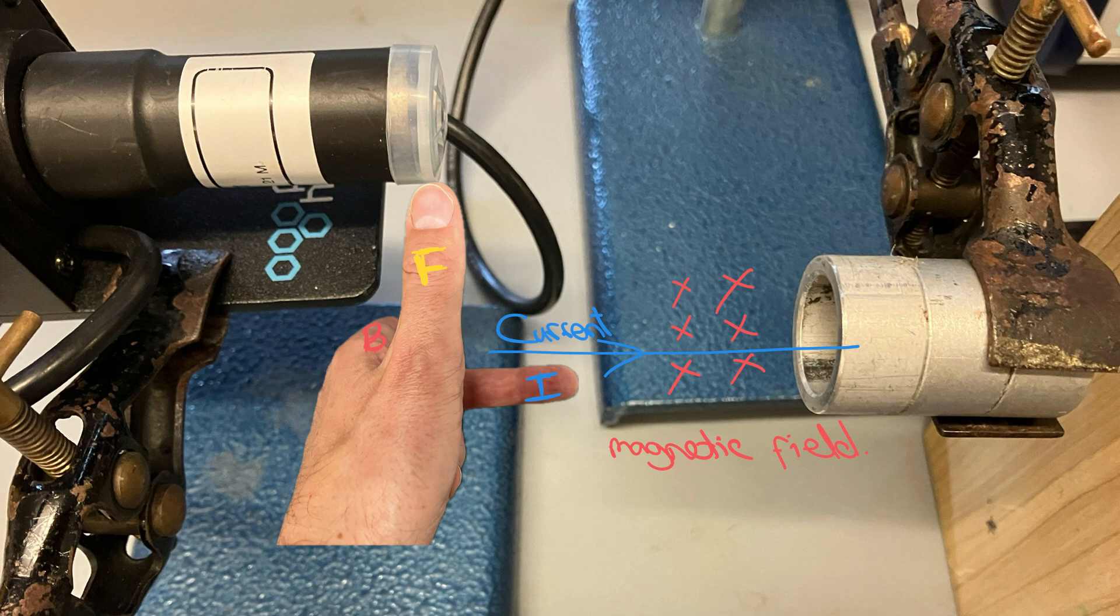Which is why those beta minus particles coming out here experience a force this way. And that leads to more of them going into the Geiger-Müller tube and increasing the count rate.